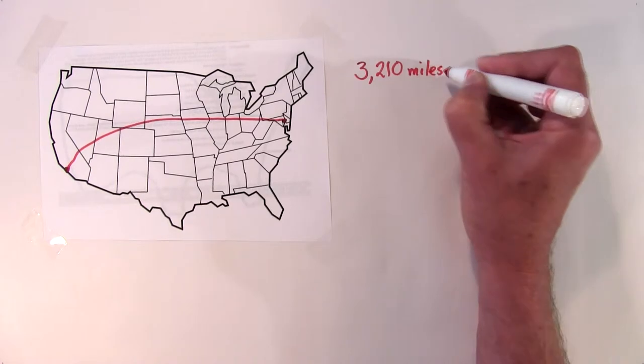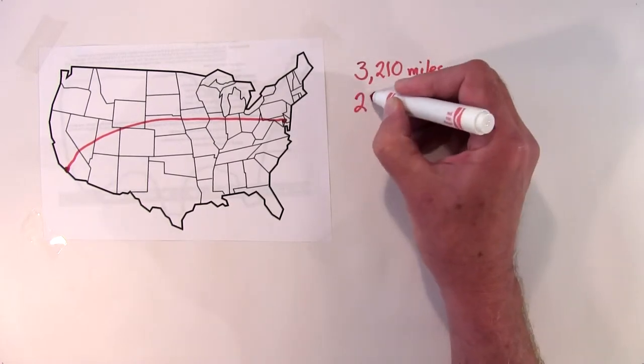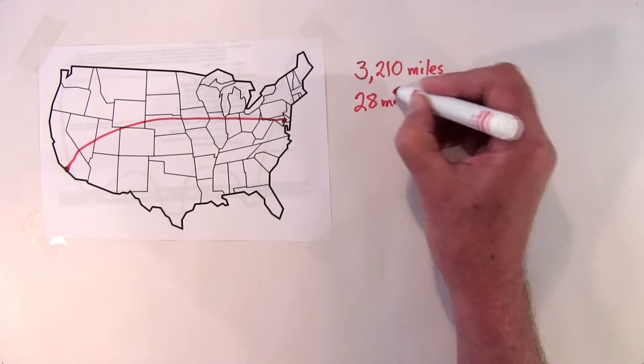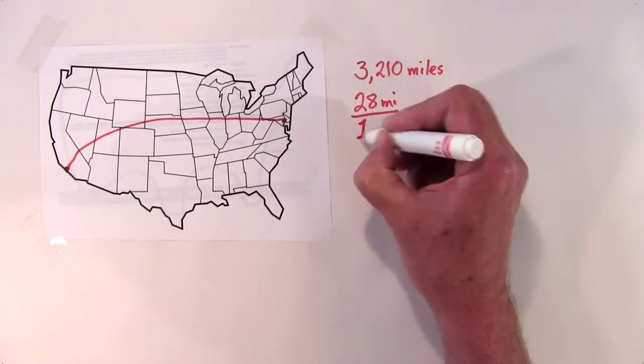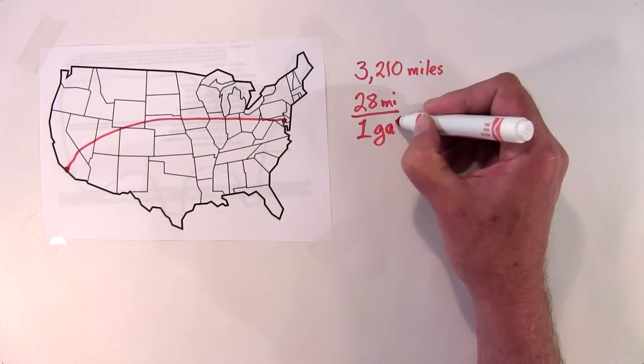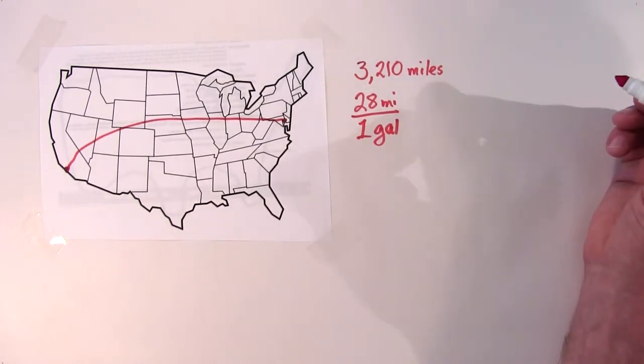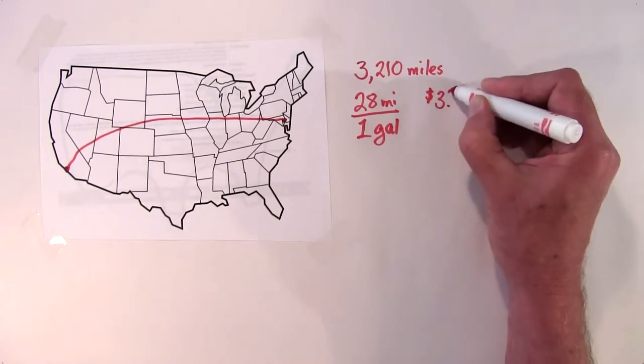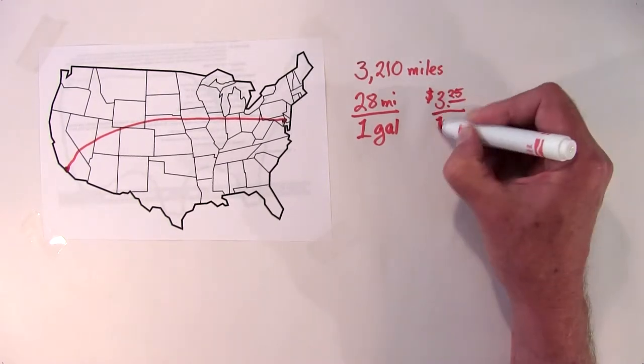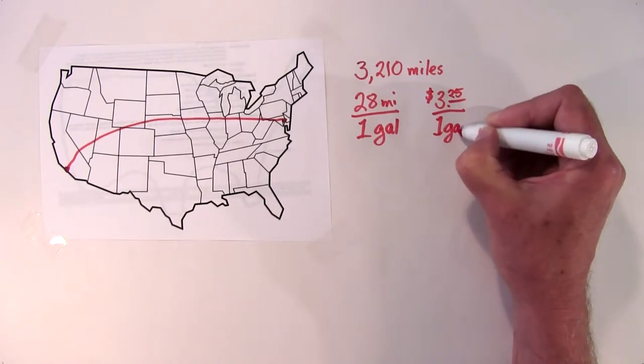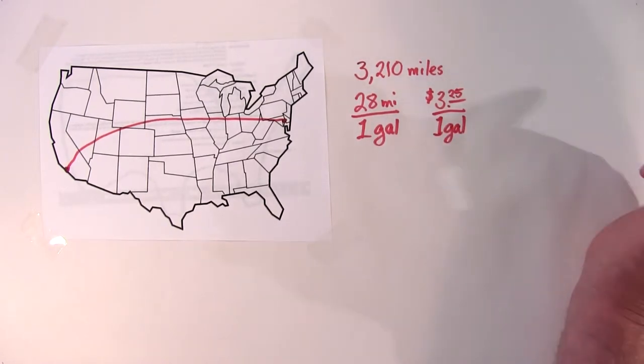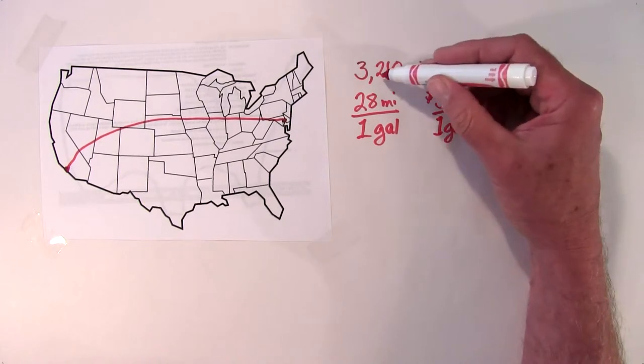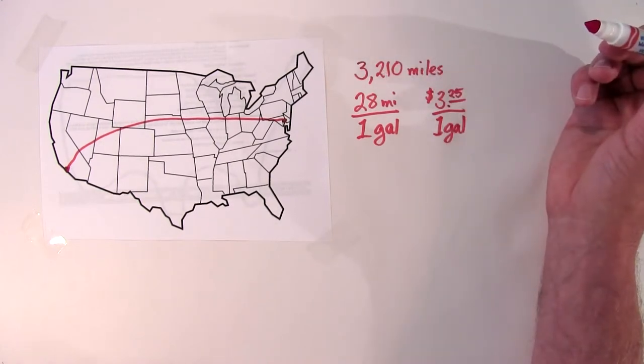And you know that your car is going to get 28 miles per one gallon of gasoline. And you also know that across the United States, the average gas price is about $3.25 for one gallon of gas. So now the big question is, do I have enough money to get there and back?